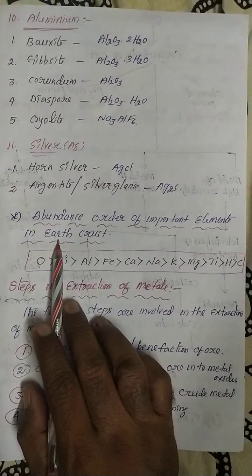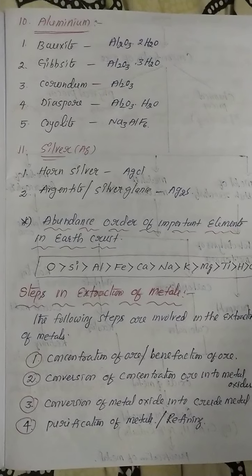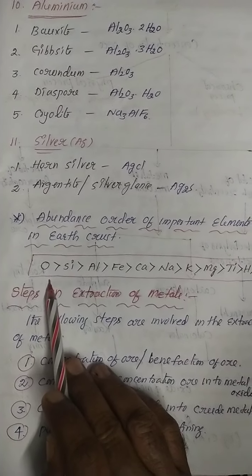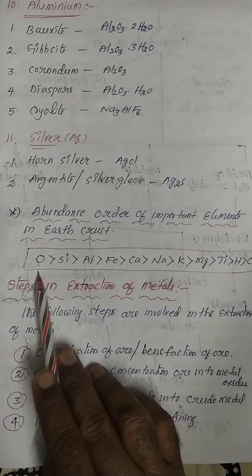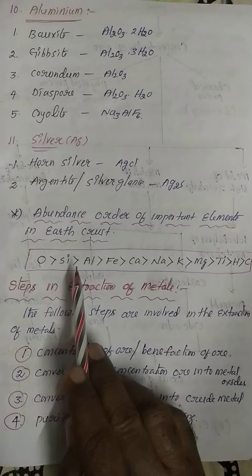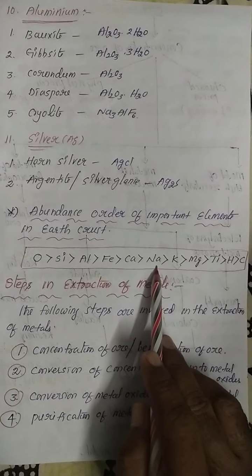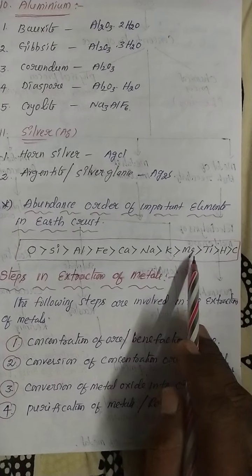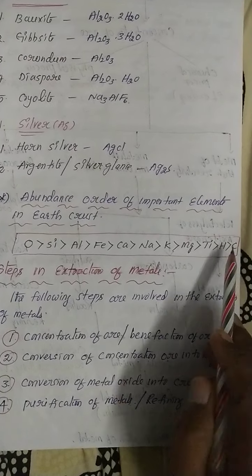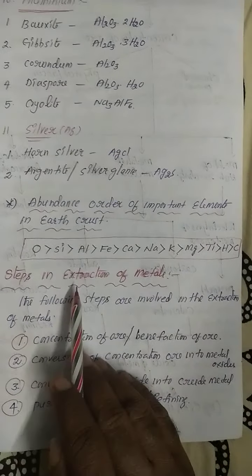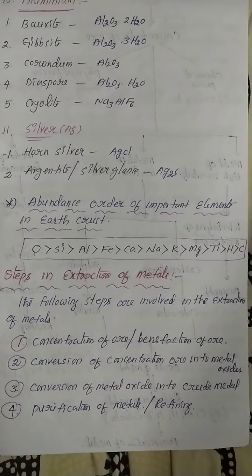Another important topic is the abundance order of elements in the earth's crust. Oxygen is the most abundant element in the earth's crust, approximately 46%. The order is: first oxygen, second silicon, third aluminium, fourth iron, fifth calcium, sixth sodium, seventh potassium, eighth magnesium, ninth titanium, tenth hydrogen, and last carbon.